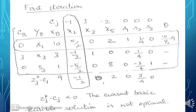We now write the first iteration tableau. cj remains -1, 3, -2, 0, 0, 0. The basic variables are: S1 (cb=0) with row [10, 5/2, 0, 2, 1, 1/4, 0]; X3 (cb=3) with row [3, -1/2, 1, 0, 0, 1/4, 0]; S3 (cb=0) with row [1, -5/2, 0, 8, 0, -3/4, 1]. The new zj* - cj row is: [9, -1/2, 0, 2, 0, 3/4, 0].